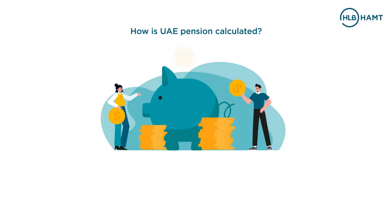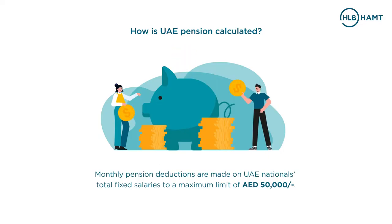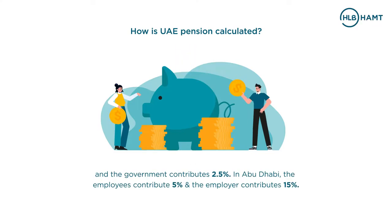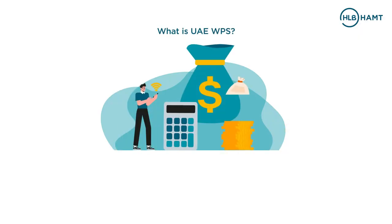How is UAE pension calculated? Monthly pension deductions are made on UAE nationals' total fixed salaries to a maximum limit of 50,000 AED. Private sector employees in Dubai contribute 5% of their total salary to this plan, the employer contributes 12.5%, and the government contributes 2.5%. In Abu Dhabi, the employees contribute 5% and the employer contributes 15%.